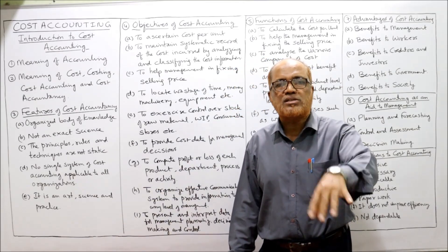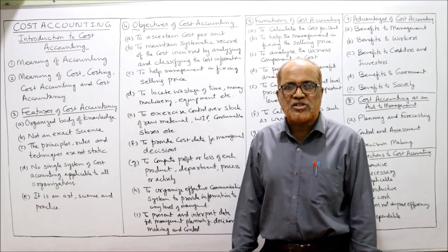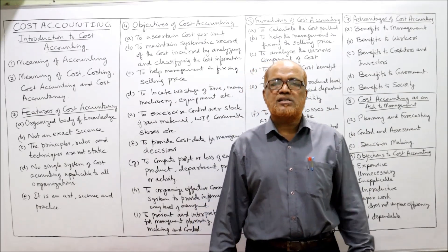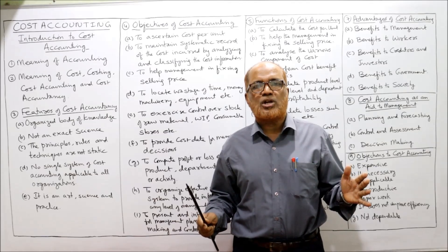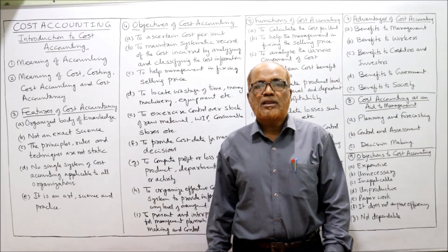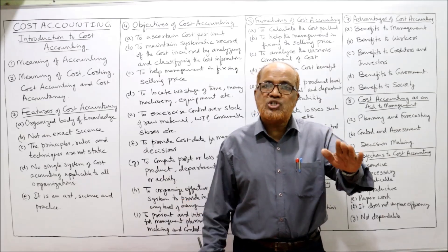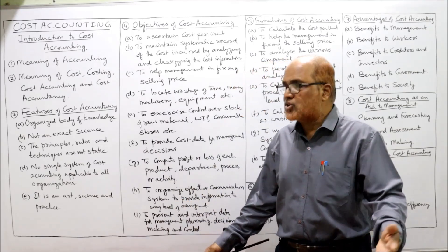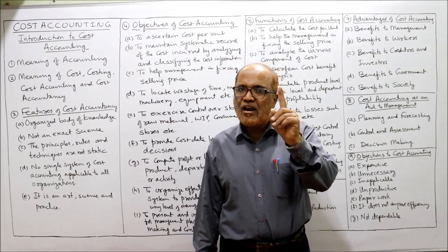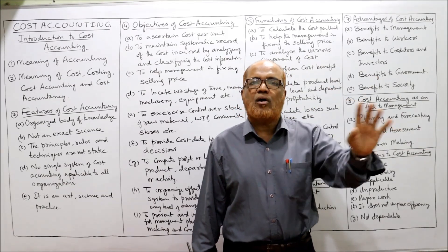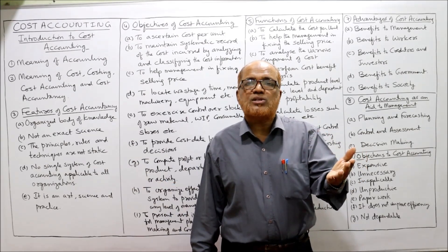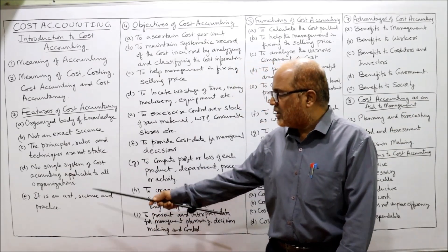Another feature is that the principles, rules, and techniques are not static — they are dynamic and will change from organization to organization. Also, there is no single system of cost accounting applicable to all organizations, because the nature of organizations differs, so different types of costing methods are applied in different organizations.